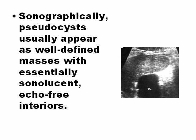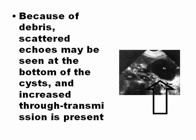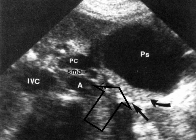Sometimes pseudocysts appear as a well-defined mass with a sonolucent interior. You can see here a pseudocyst that is totally anechoic. But sometimes there are debris that can produce echoes in the bottom of the cyst, and increased through-transmission is present. Remember, these are not real cysts — they are pseudocysts. In the picture you can see in the bottom of the pseudocyst the tissue debris that are echogenic.